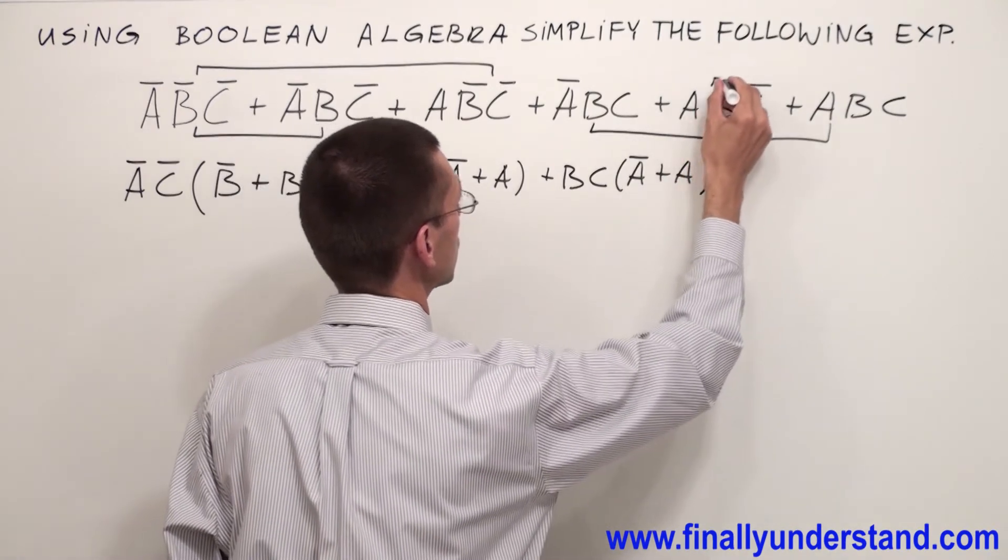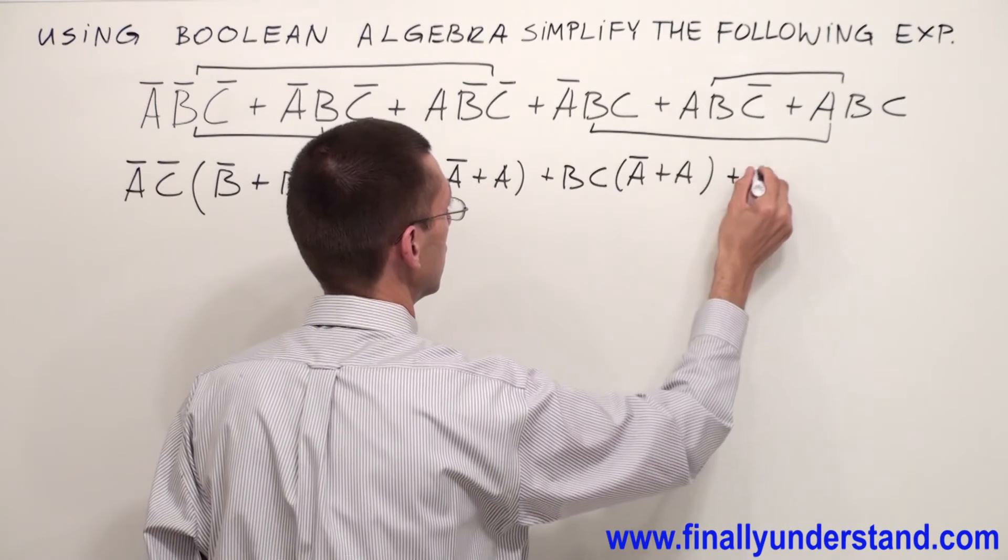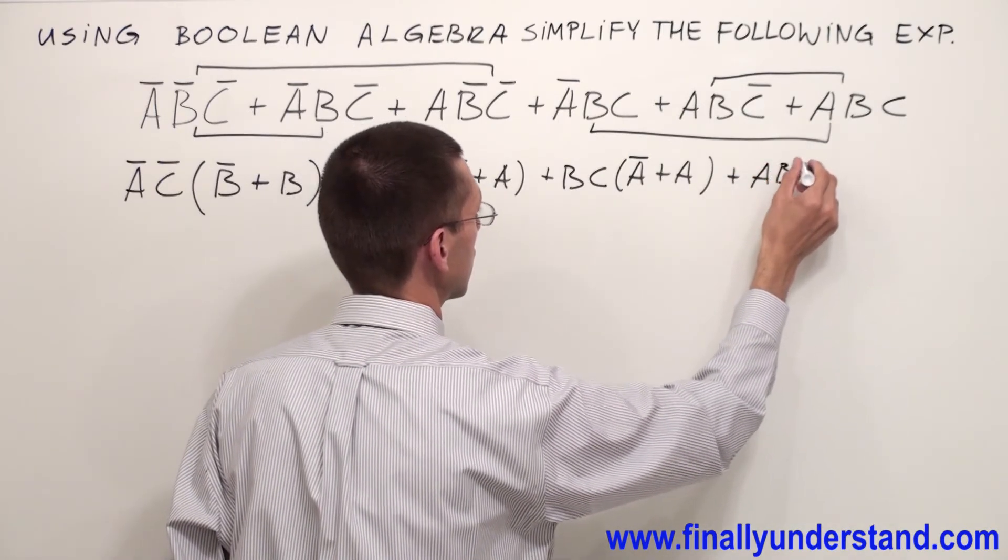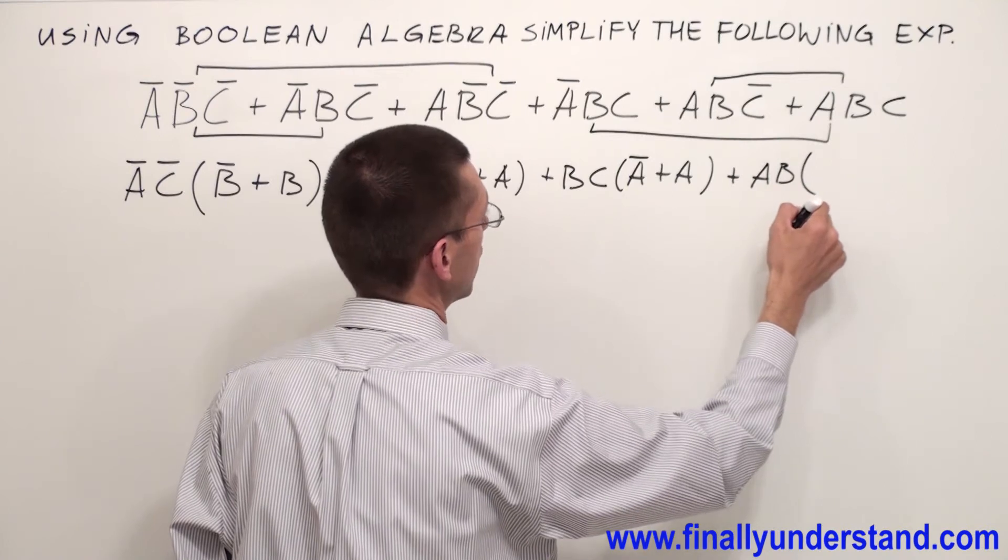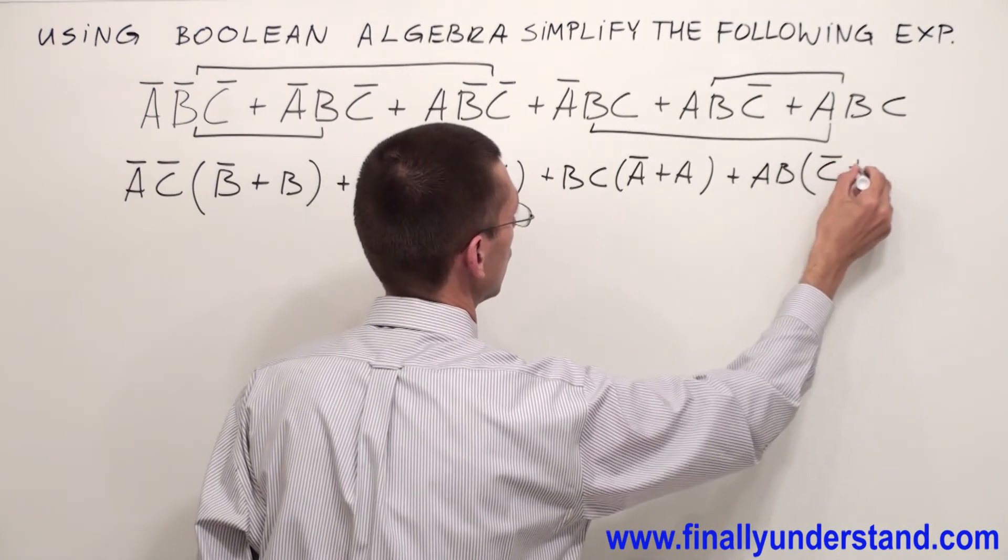And again I can use ABC because I have AB over here and my common variables are AB and inside of the parenthesis I'm going to have C̅ or C.